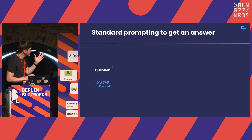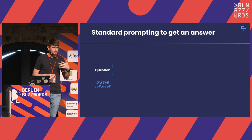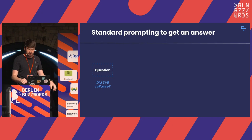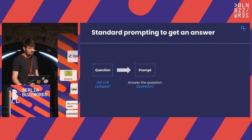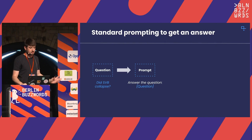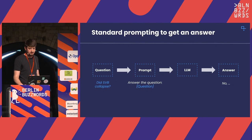Let's first see how standard prompting works with an LLM with no retrieval augmentation, just the basic stuff. We have a question, this question gets embedded in some kind of prompt — you can give some more instructions maybe on the style — this prompt we then feed to an LLM, and that LLM produces an answer. Simple.